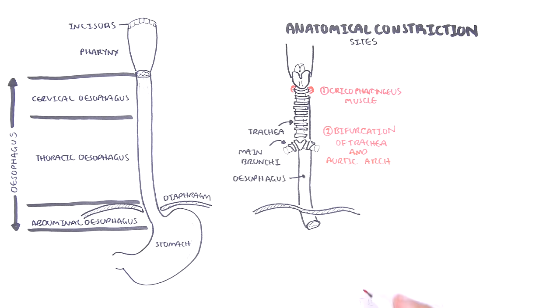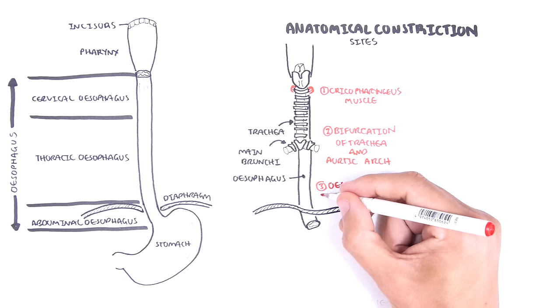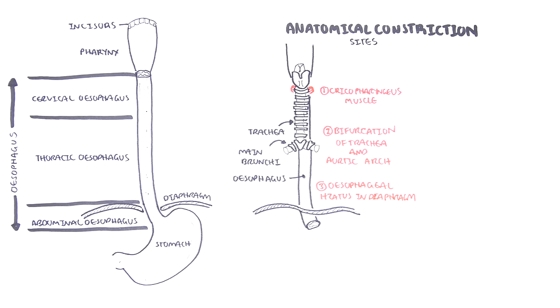The third anatomical constriction site is the lower esophageal sphincter, where the esophagus passes through the diaphragm.